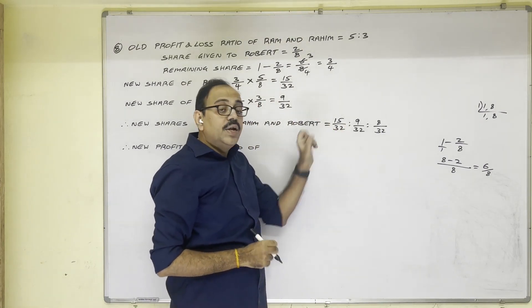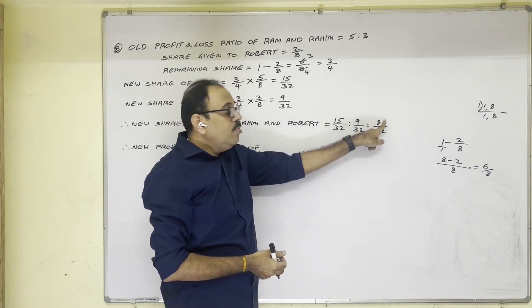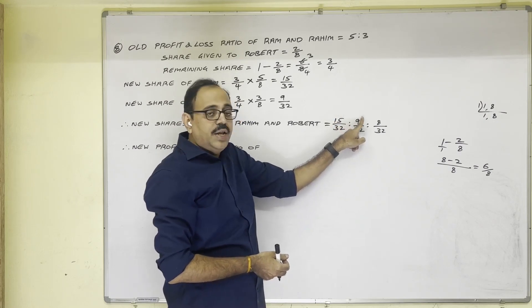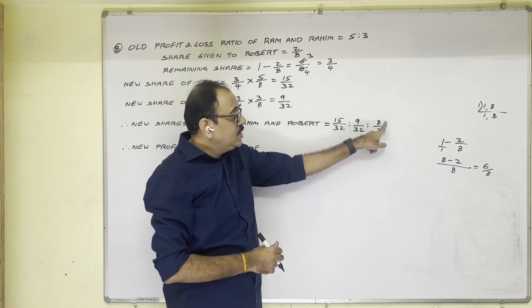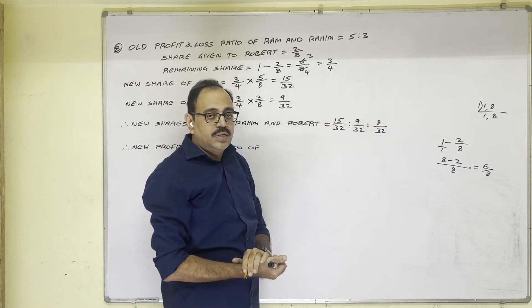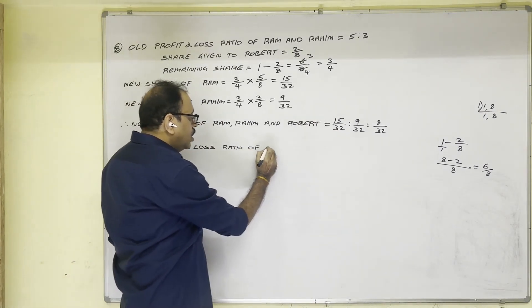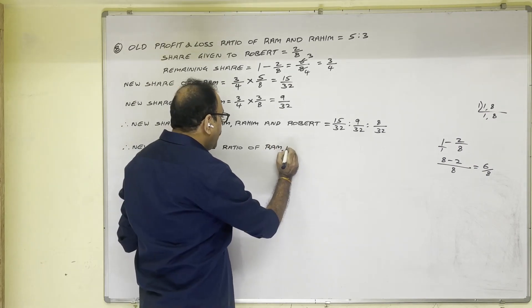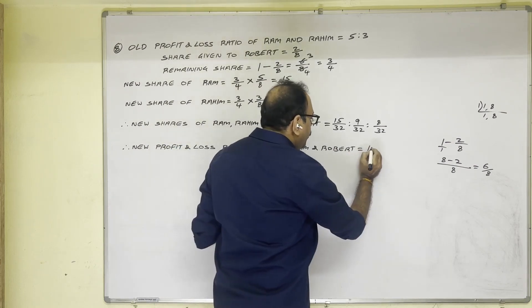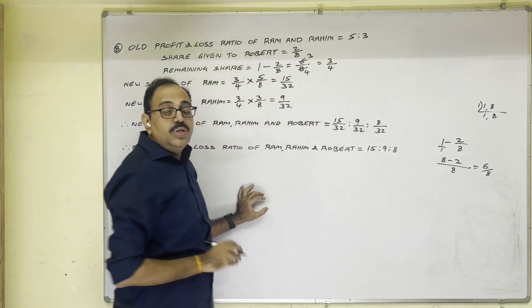And whether this answer is correct or not, we can do cross check. How? All numerators if you add, denominator should come. 15 plus 9, 24. 24 plus 8, 32. So denominator is coming, so this answer is correct. So how we can write this. New profit and loss ratio of Ram, Rahim and Robert is equal to 15 is to 9 is to 8. So this is the answer.